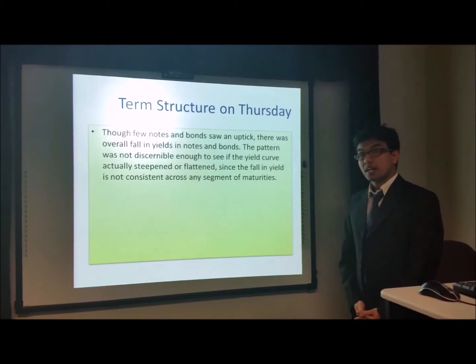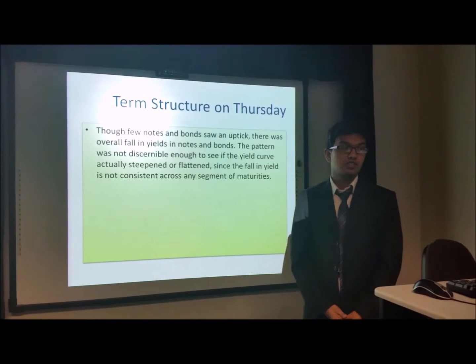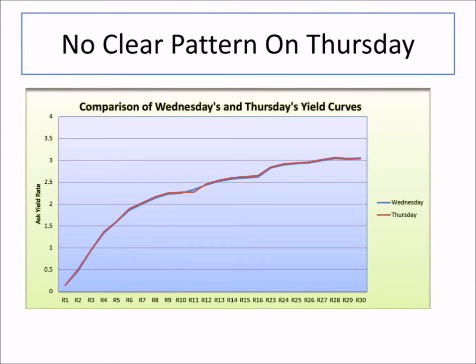On Thursday, there was no consistent pattern for the term structure. Some notes and bonds saw an uptick in rates, some saw a fall — especially the 10-year note saw a large fall. Thus, there was neither flattening nor steepening of the term structure. The stock market was very robust, as the Dow Jones Industrial Average rose almost 200 points. The market's risk preference seems to be increasing because of Wednesday's announcement that the Federal Reserve would discontinue quantitative easing.